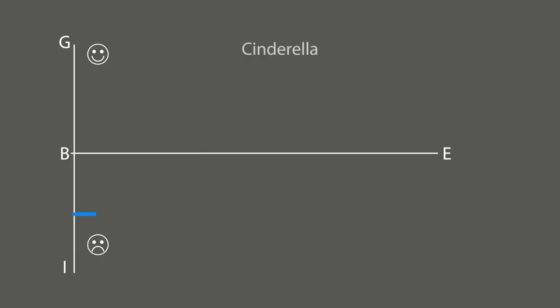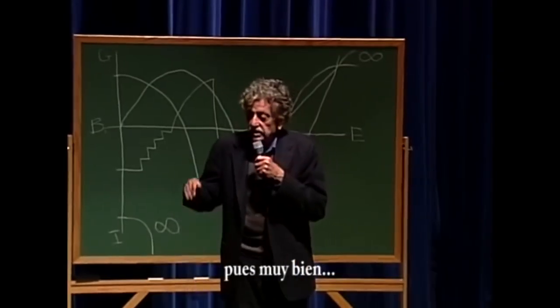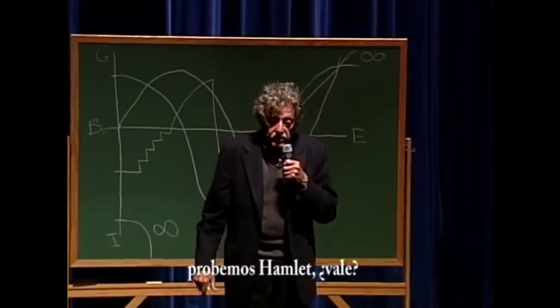We cannot forget the Cinderella shape. This story starts with a low point, steadily builds up to something great, then crashes down, only to rise again to a happy ending. It's a rollercoaster of emotion, keeping viewers on the edge of their seats. I've added a link in the description to a video of Kurt Vonnegut going over the different shapes — feel free to go check it out.